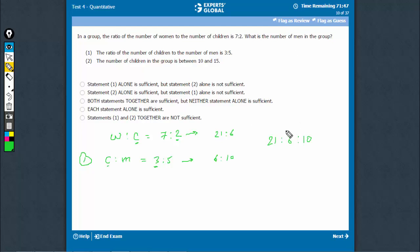The question is, how many men? Men is this one, W, C, M. M could be 10, 20, 30, anything. So, that's why statement 1 is not sufficient.